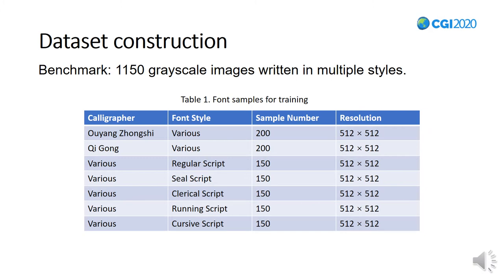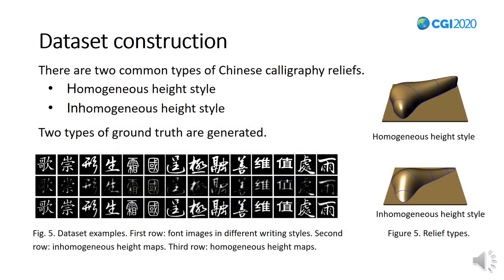We observe that there are two common types of calligraphy reliefs. One is in inhomogeneous height style, where the stroke borders have been smoothed but the overall height of each stroke is nearly identical. The other is in homogeneous height style, in which the stroke height varies with the changing of stroke widths.